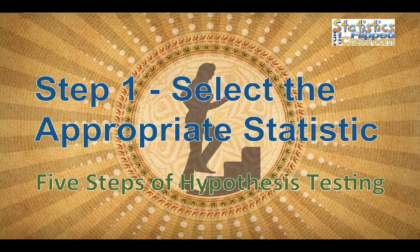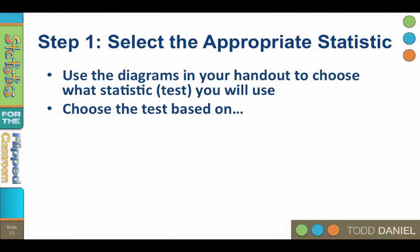Step number one: select the appropriate statistic. Now this is both the easiest and the most difficult step. As you are learning statistics, this will be the easiest step, because when it comes time to choose the appropriate statistic, the answer will be whatever test we're learning this week. So if we're learning about single sample t-tests, the answer to step one will be single sample t-tests.